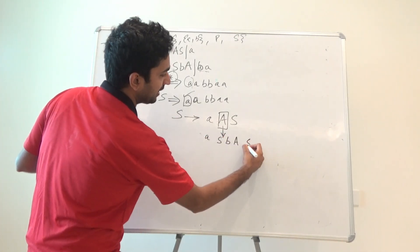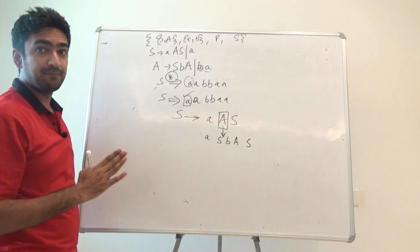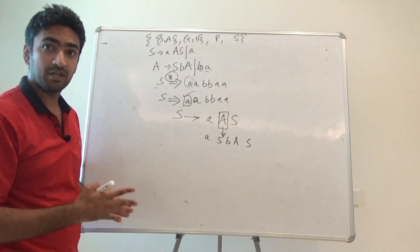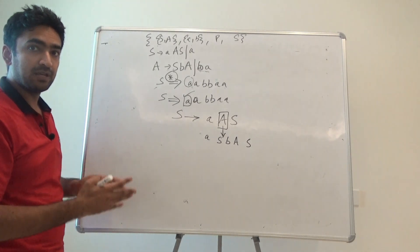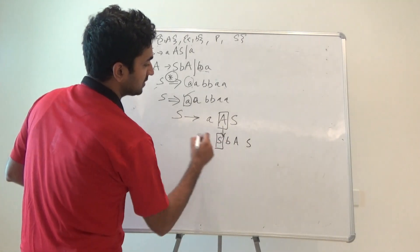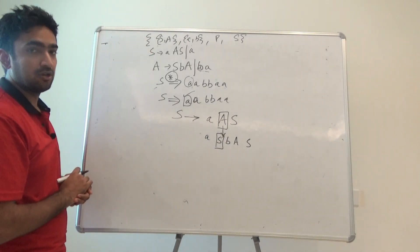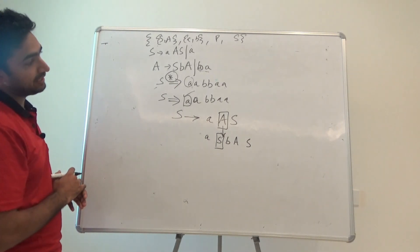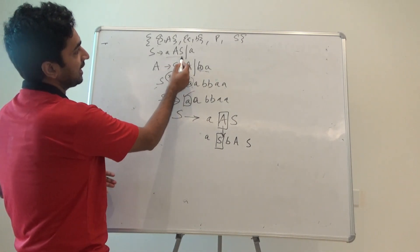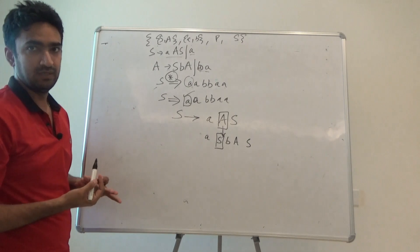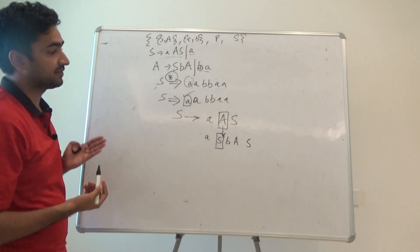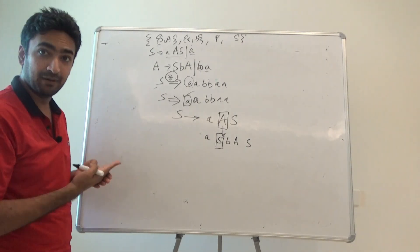I want aabbaa, so I would rather write this value as Sba. And again, S—since I picked the leftmost non-terminal out of it, I will be picking the leftmost non-terminal, which is this particular S. Now in this S, I can take the value of this S as aaS or A.